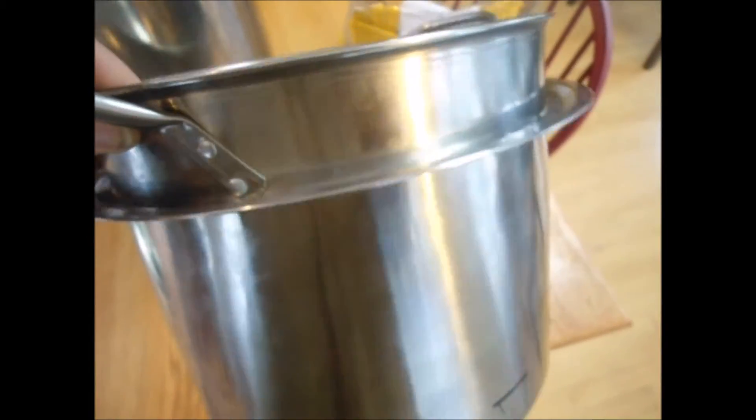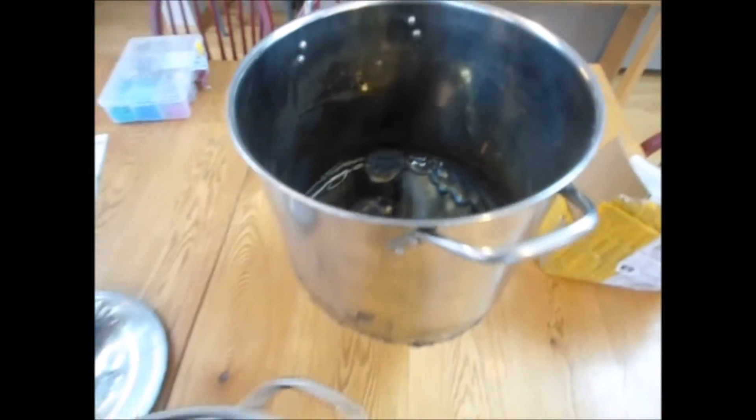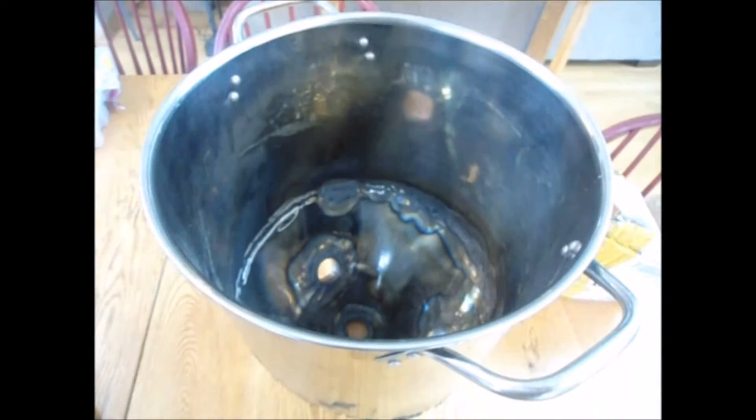So we've got our pot that's going to be our malt basket, and we've cut out the lid for this larger one. That's the conical.